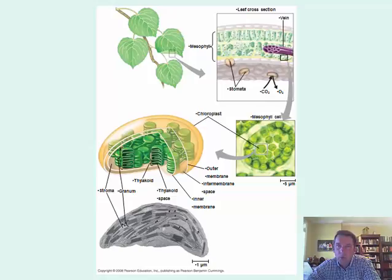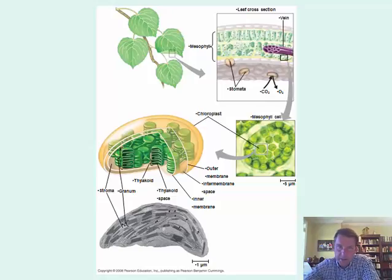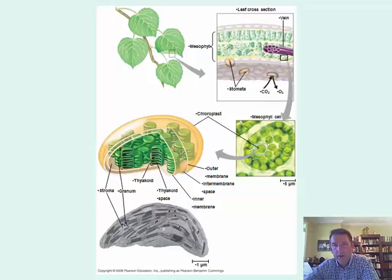Looking at one of these chloroplasts pulled out here, here's a microscopic view of a mesophyll cell, and then we can look at a single chloroplast in this diagram to see more of its structure. This shows an electron microscopic view of what one of these chloroplasts actually looks like, along with a diagram explaining it. The chloroplast has a double membrane.